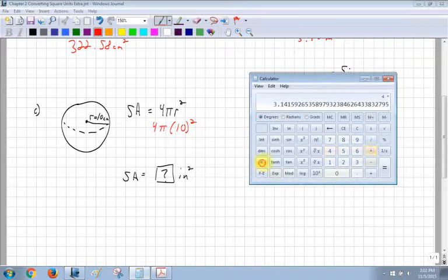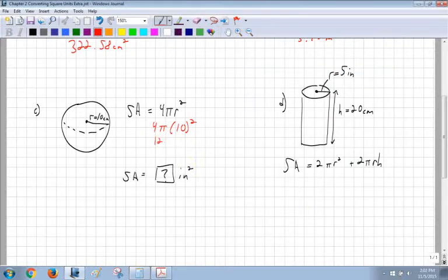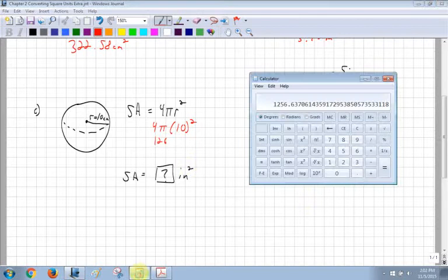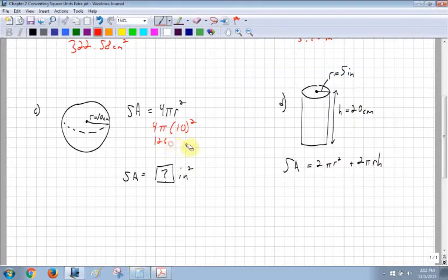4 times pi. Typically, I would go 10 squared first. But I just know that's 100. So I can just deal with it there. So I have 1256.64. So 1256.64.